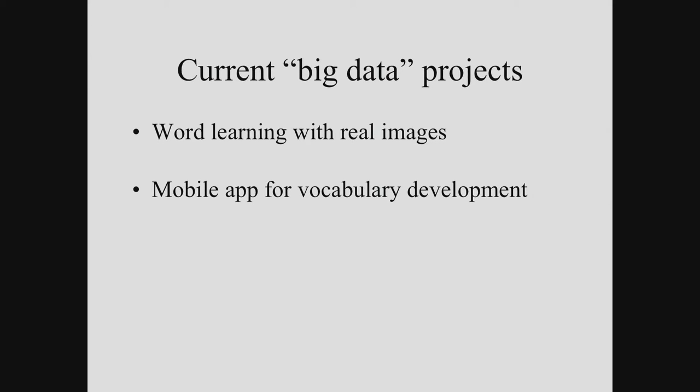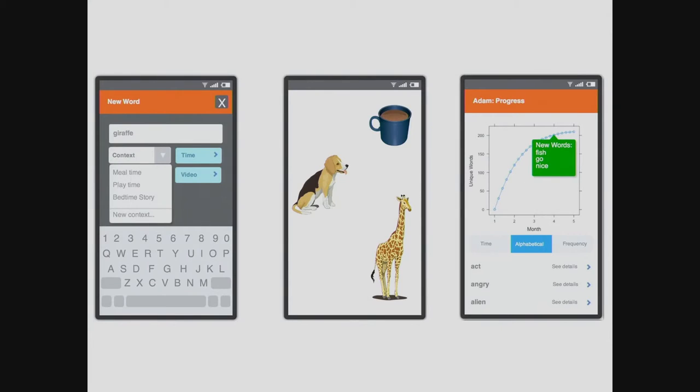With Mike Frank's lab at Stanford, we've been working on developing a mobile app for vocabulary development data collection. The basic idea is that if you have a small child, as that child begins to produce words, the first instance of one of those words you can log. As a consequence, we have a record of how children's vocabulary is developing over time.